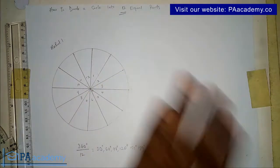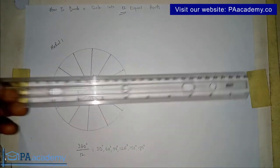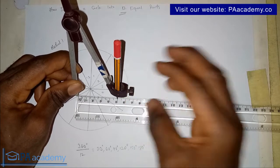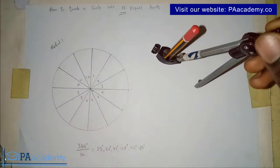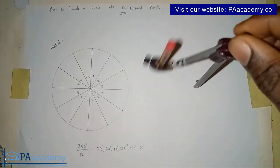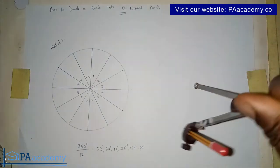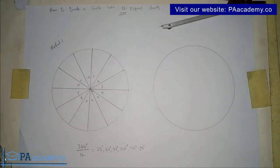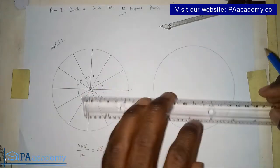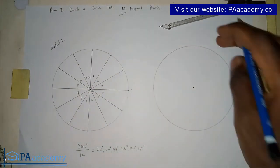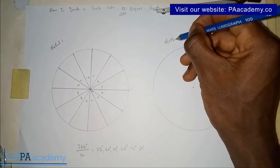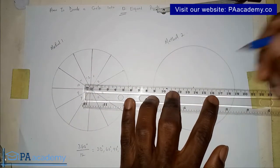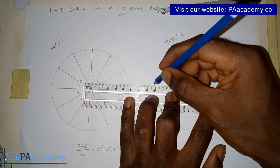Now let's go to Method Two. Method Two works when you know the radius of the circle. Let's work with a radius of 5 centimeters. We already have a circle drawn. Note the center of the circle. What you are going to do with this circle is first divide it into four equal parts, so let me draw the diameter.